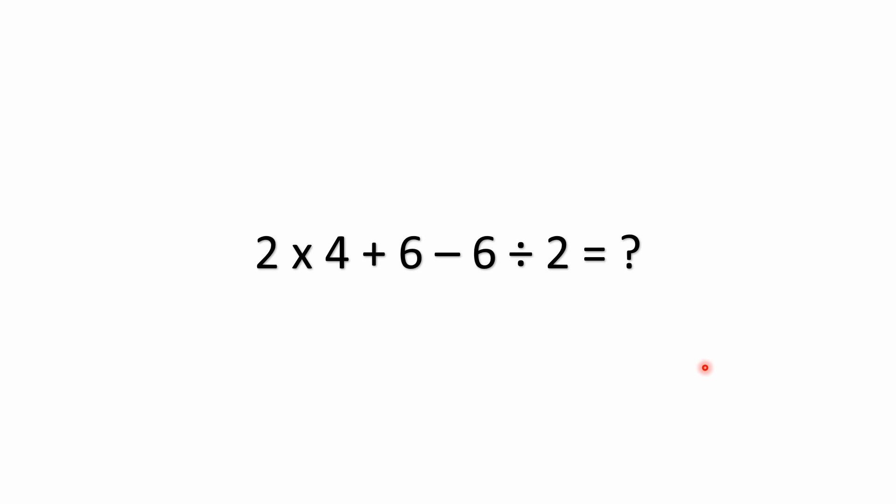Hello, everyone. Welcome back to the Math Puzzle Crash Course. We have a simple problem here with multiple operations. We've got multiplication, addition, subtraction, and division all in one equation: 2 times 4 plus 6 minus 6 divided by 2, and we want to figure out what that equals.